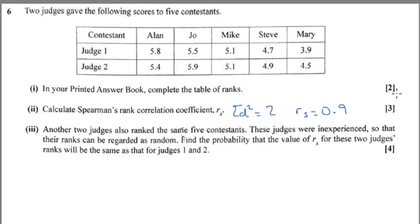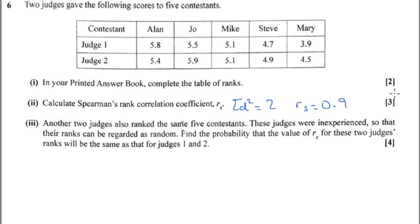Three is actually quite tricky. I think it's the hardest question on the paper. It says another two judges also ranked the same five contestants, but these judges were inexperienced, so their ranks were randomly assigned.